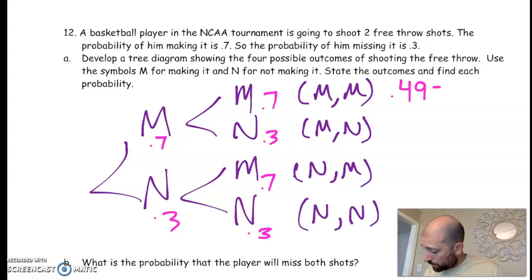M times M is 0.49, which is 49 percent. M times N is 0.21 or 21 percent. N times M is 0.3 times 0.7, again 0.21 or 21 percent. And N times N is 0.3 times 0.3, which is 0.09 or a nine percent chance.